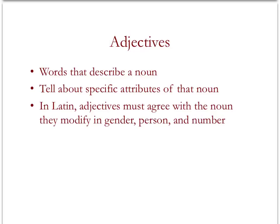There are also adjectives. Adjectives are words that describe a noun. They can describe a subject, a direct object, an indirect object, or even a noun that describes another noun. They tell specific attributes of that noun — is it big, is it small, is it funny, is it silly? In Latin, adjectives must agree with the noun they modify in gender, person, and number. This isn't something we worry about in English, but in Latin it's important.